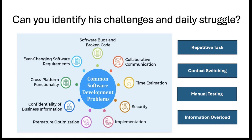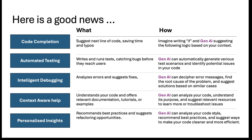Coming back to the challenges developers face daily — there is a solution and here is the good news. Imagine a magic where code completion becomes like an automated machine — a virtual assistant sitting with you, helping you identify the next line of code and also helping you get rid of any typos. That's one thing that is marvelous. Second, automated testing: GenAI not only runs test cases, it also writes them, catches bugs before they reach users — an entire new paradigm of testing.